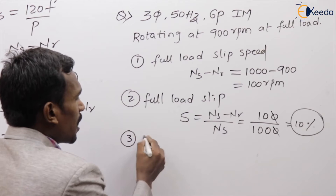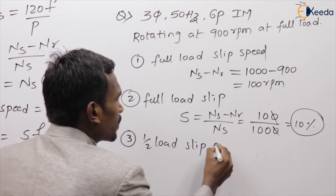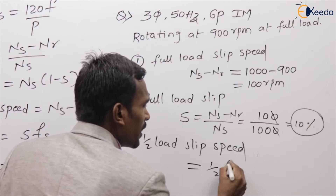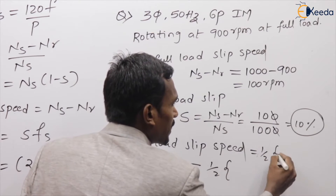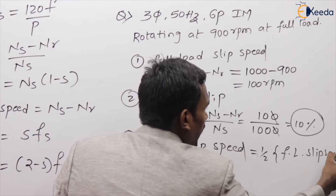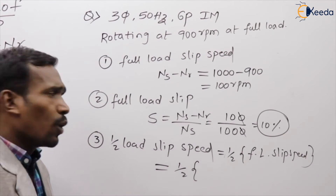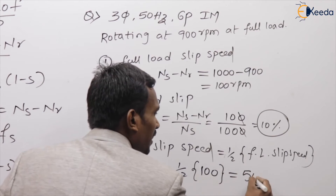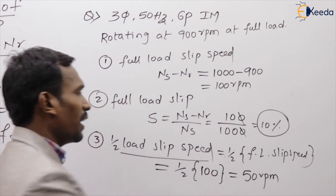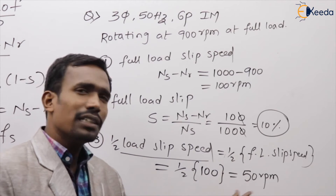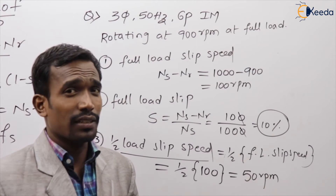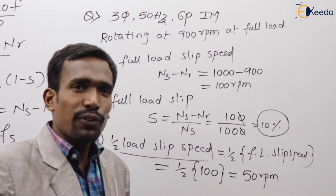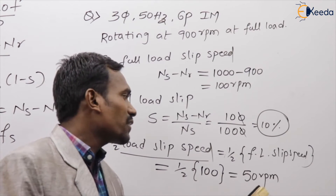Third question: what is the half load slip speed? The Xth load slip speed equals X into full load slip speed. Here X is 1/2 and full load slip speed is 100 RPM, so half load slip speed equals half into 100 equals 50 RPM. At half load, just 50 RPM is slipping.